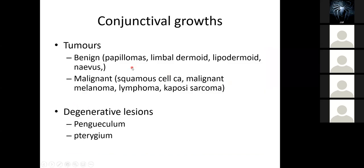Now we'll go to some of the disorders commonly seen. We will focus on tumors — benign and malignant. For the benign ones, we look at papilloma, limbal dermoid, lipodermoid, and the nevus. For the malignant ones: malignant melanoma, lymphoma, and squamous cell carcinoma. For degenerative lesions, we'll look at the pinguecula and the pterygium.